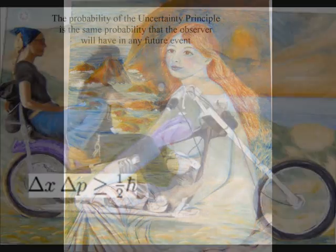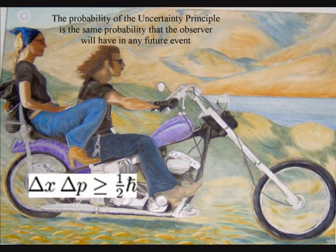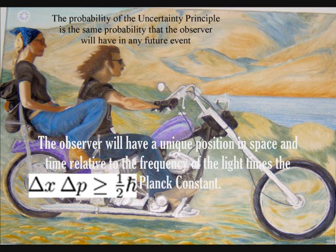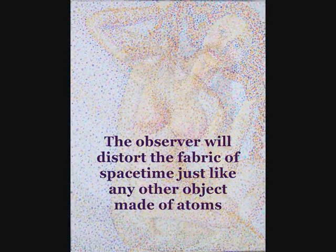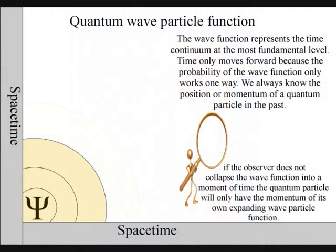Put in a more scientific way, Heisenberg's uncertainty principle of quantum physics is the same uncertainty that the observer will have with any future event. The atoms of the observer bond together and then collapse the wave function in unison, forming their own unique future, position or reference frame in space and time.